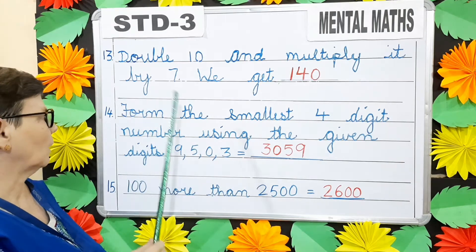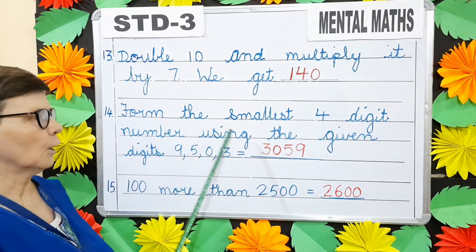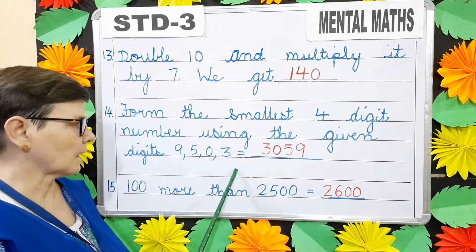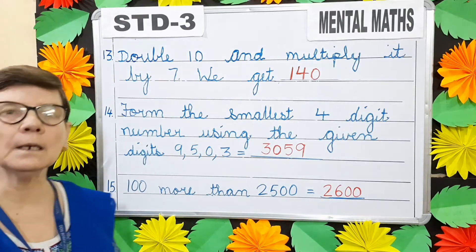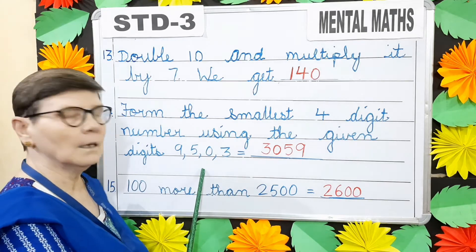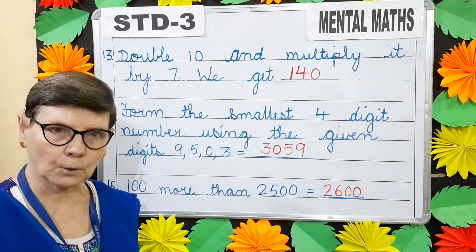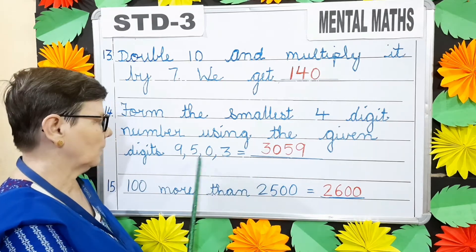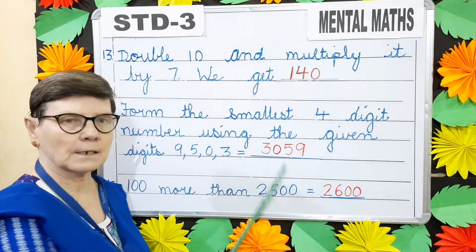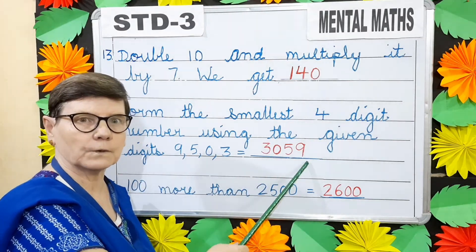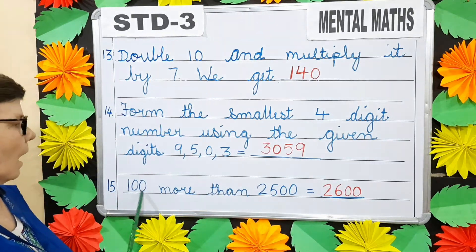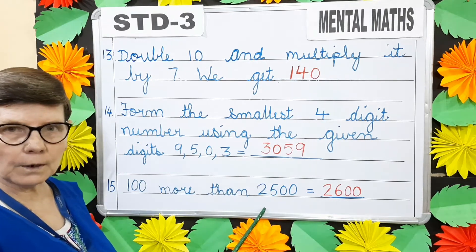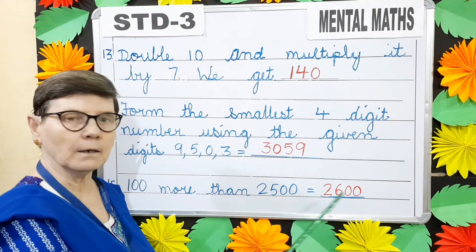Question number 14: Form the smallest 4-digit number using the given digits 9, 5, 0, 3. Form means make. The smallest digit is 0, but we will not begin with 0, so go to the second smallest digit — that is 3. So the number is 3059. Question number 15: 100 more than 2500. More means plus, so 2500 plus 100 will give you 2600.